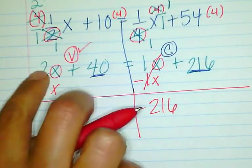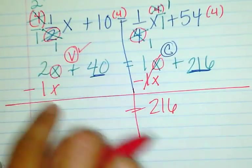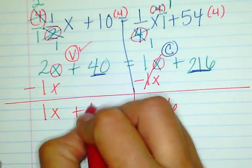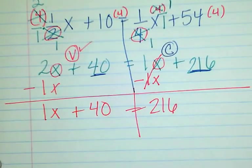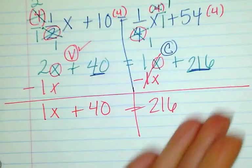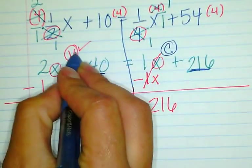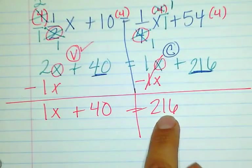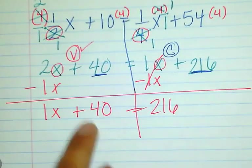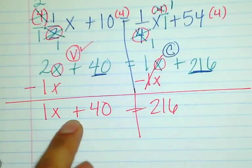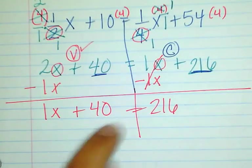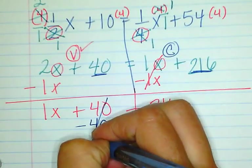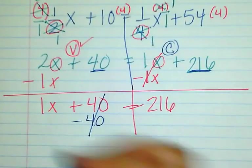Over here I have 2x minus 1x — they are like terms so I can combine them — and I still have the plus 40. Now all variables are on the correct side. But not all constants are: 216 is already there, but the plus 40 is not. So I do the inverse of plus 40, which is minus 40. They zero out on that side, and what I do to one side I do to the other.